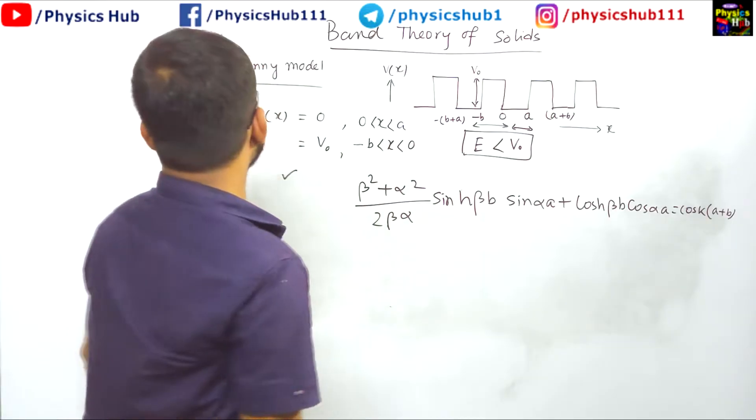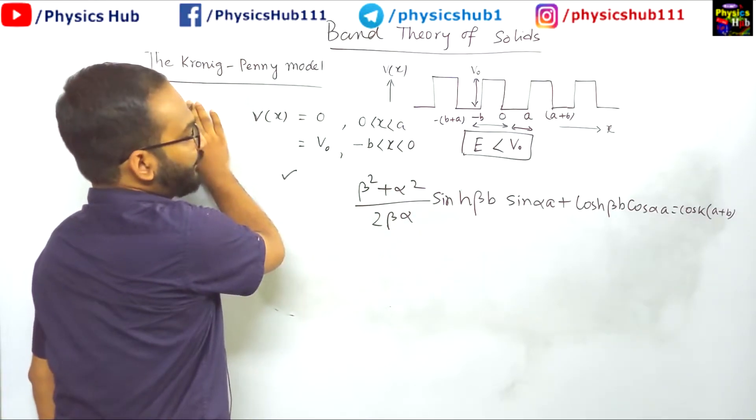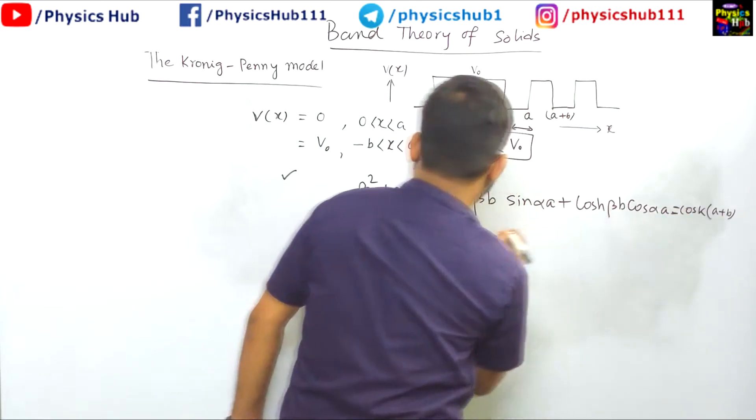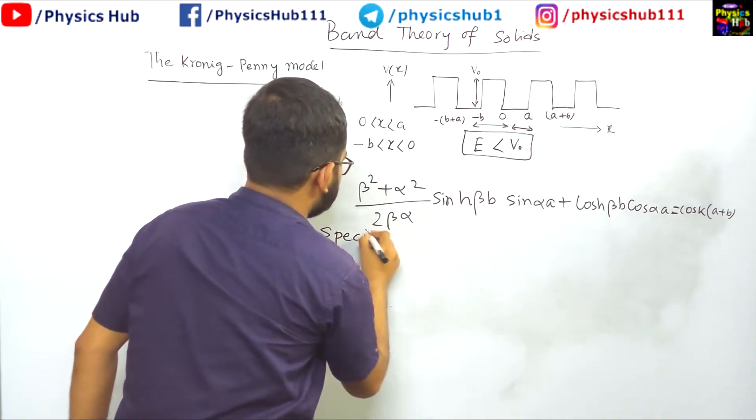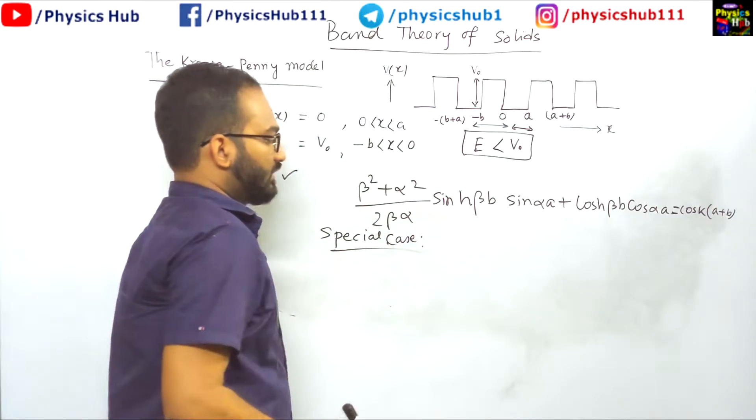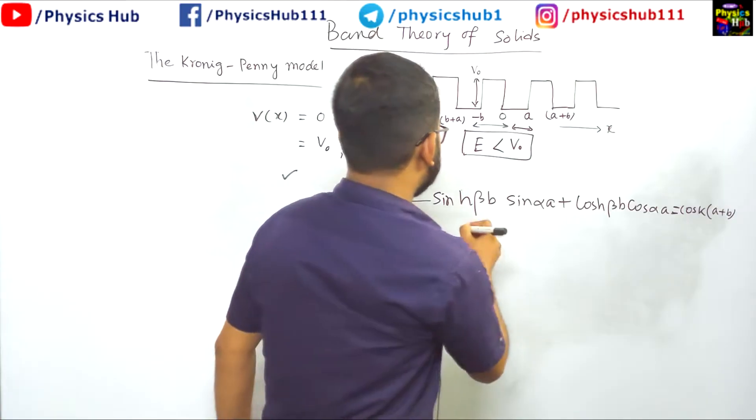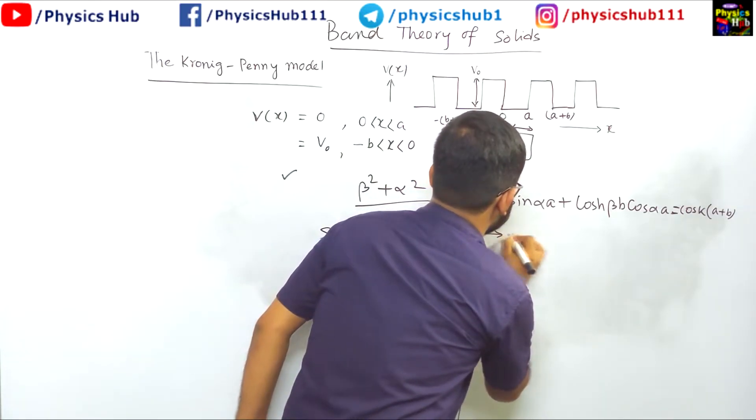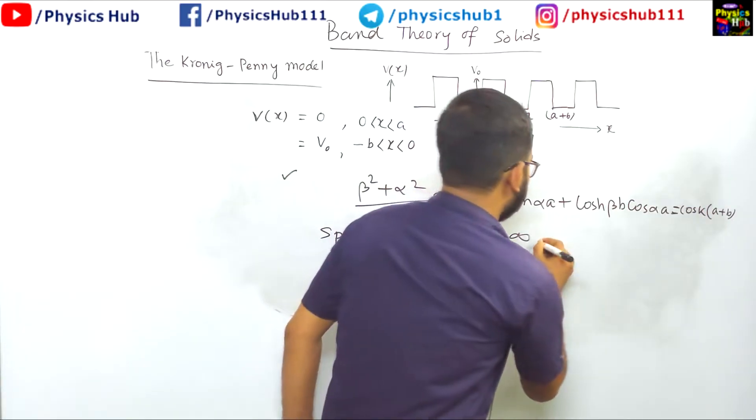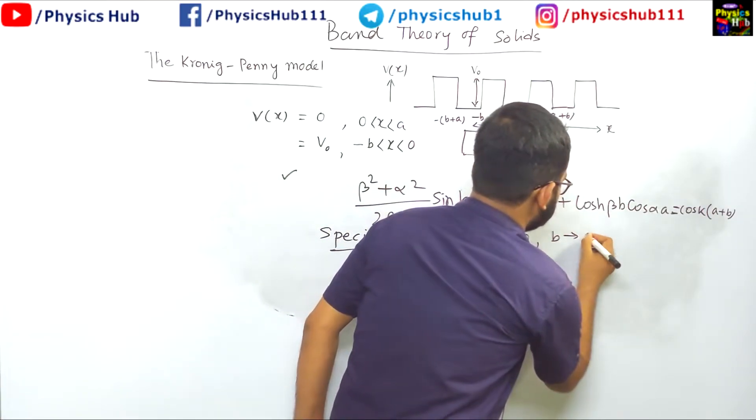Now what Kronig-Penney did after this? He considered a special case. What was the special case? In the special case he considered that this V₀ is tending to infinity and the width b is tending to 0.